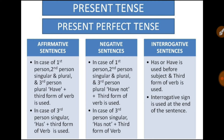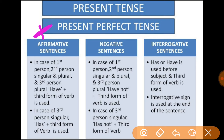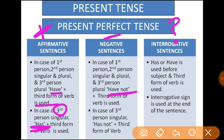For affirmative (positive) sentences: in the case of first person, second person, and third person plural — use have plus the third form of the verb. In the case of third person singular — use has plus the third form. For negative sentences: have not or has not plus the third form. For interrogative sentences: has or have is placed before the subject, followed by the past participle, and a question mark is added at the end.